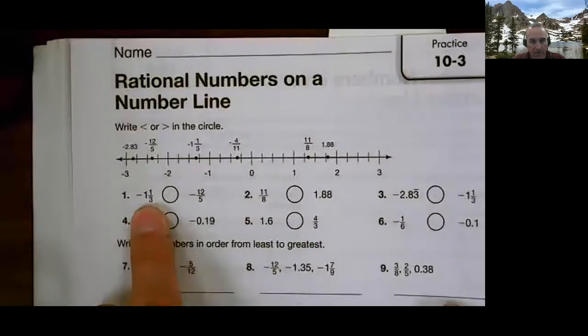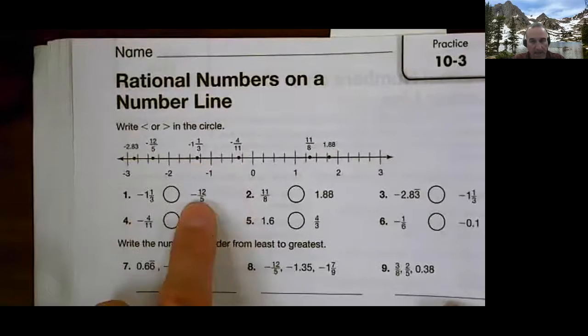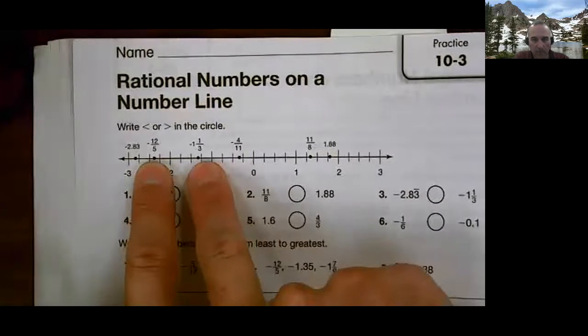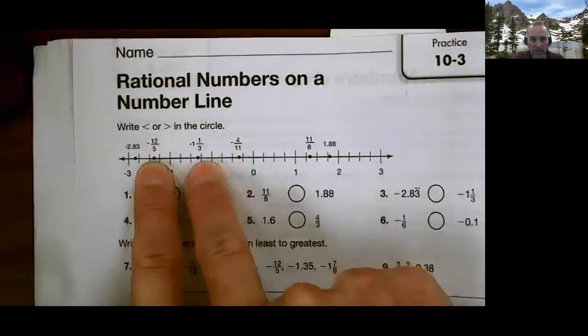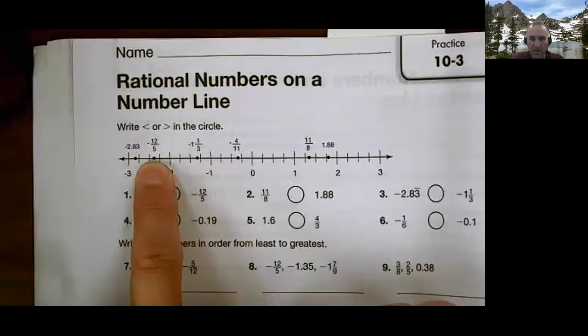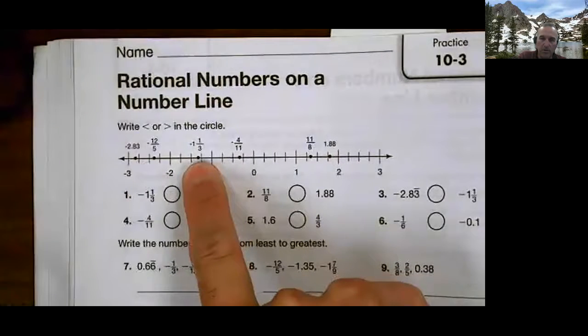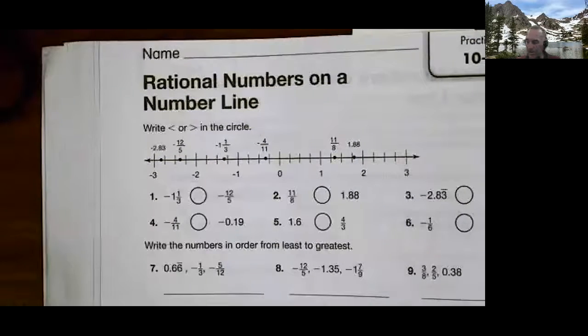One and negative one and one-third. There it is. It's right there on the number line. Negative 12 fifths. It's over there. So the two values are right there. Visually, just looking at this, you can see that that one, negative 12 fifths, is much smaller because it's further to the left on the number line. This number, negative one and one-third, is greater because it's to the right on the number line.